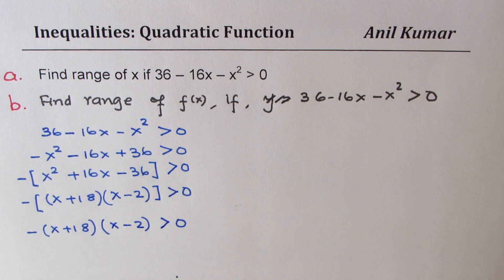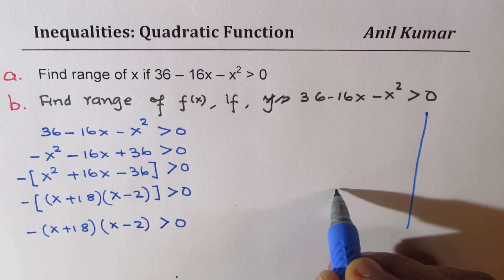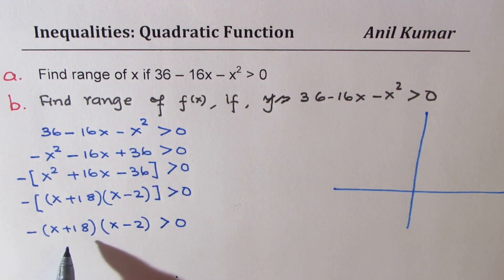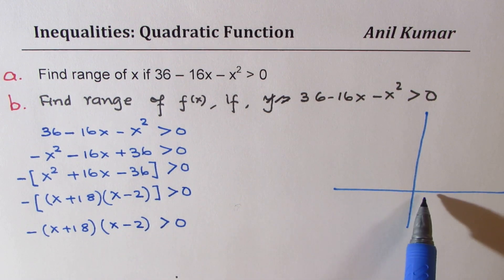Now, let us try to sketch this particular function and see how it will look like. So we'll sketch here. Since one of the roots is negative 18, which is far here, and the other one is at plus 2, somewhere very close to the origin.